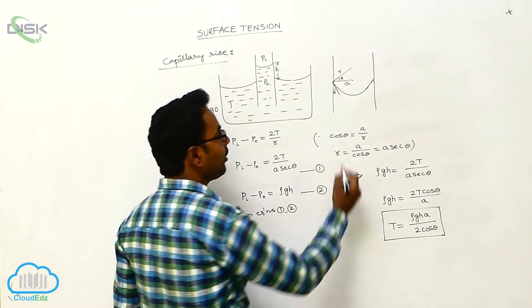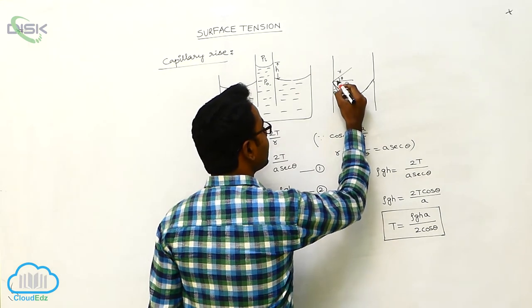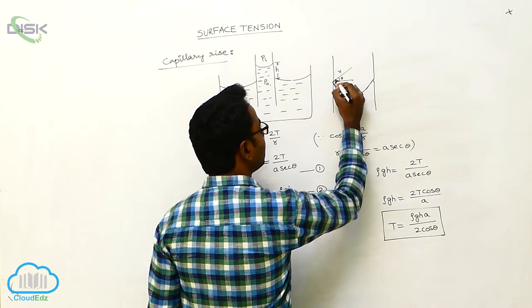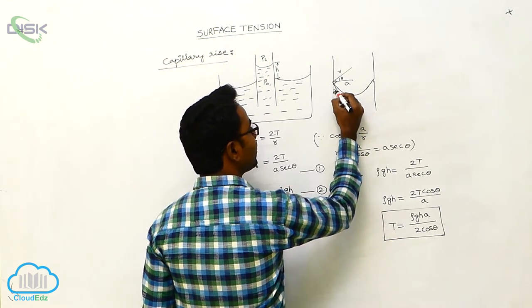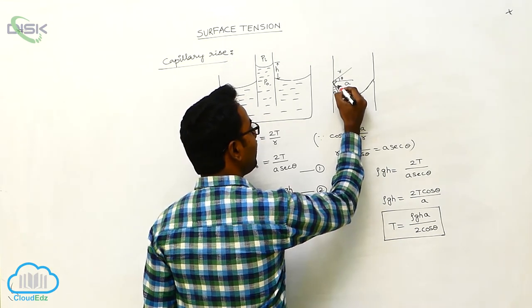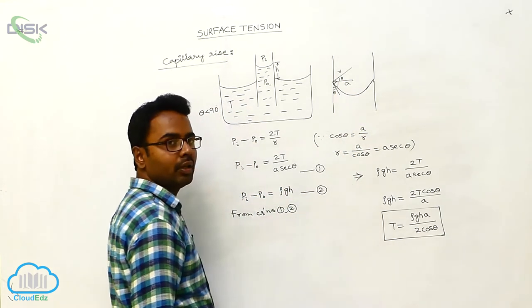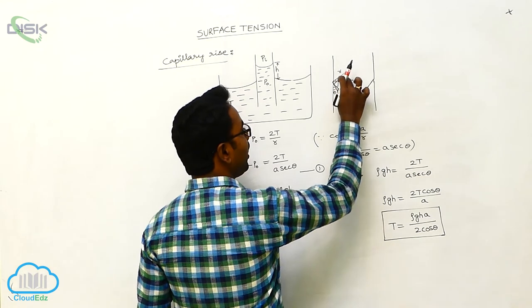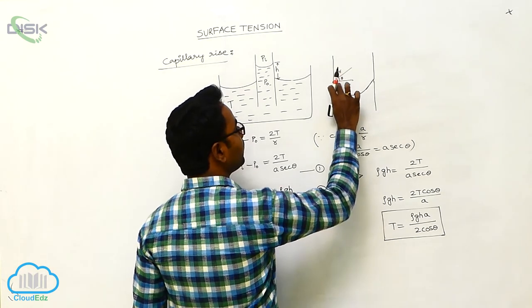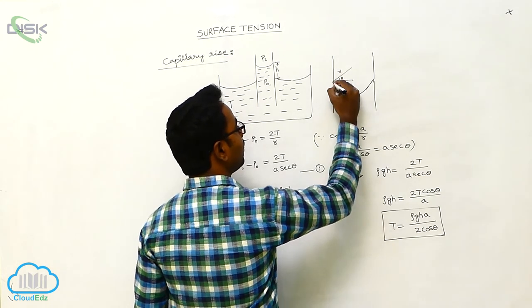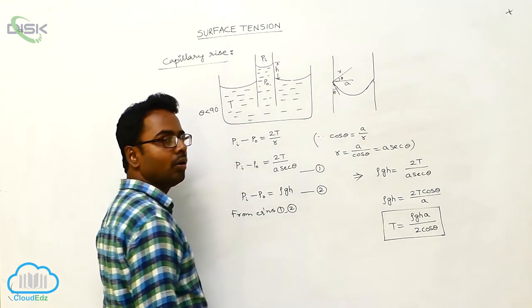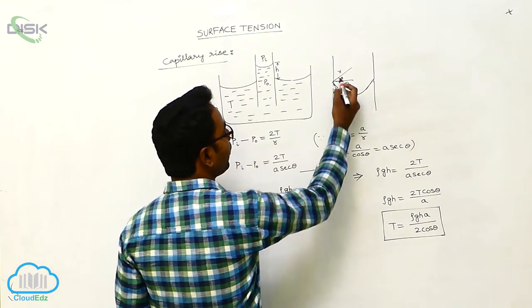Here, the total angle from here to here, this angle is 90 degrees. 90 plus theta. And here it is 90. This will be theta. The total angle here is 90 plus theta. It is 90. Again, it is theta. This angle is now theta. For this theta, we apply the cosine.